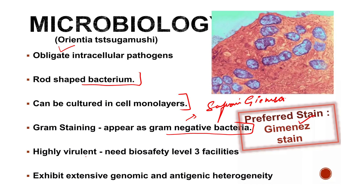The organism is highly virulent and requires biosafety level three facilities, meaning contact with soil carrying infected larvae must be strictly avoided. It exhibits extensive genomic and antigenic heterogeneity — meaning genetic variations and different mutations can occur in Orientia tsutsugamushi, which is why different individuals in different areas may present with different types of fever and symptoms.